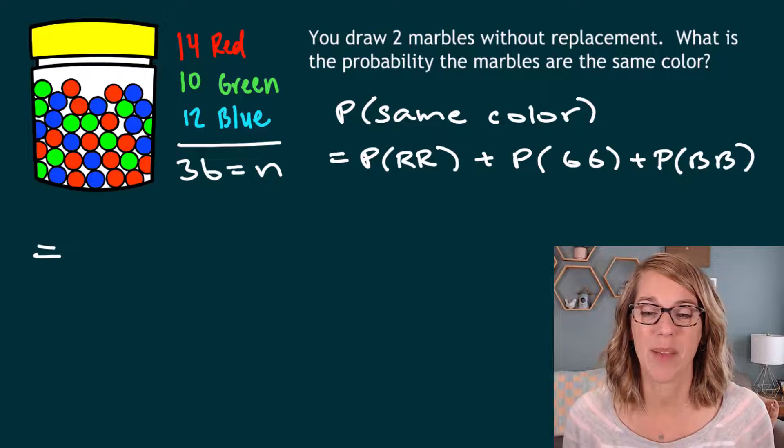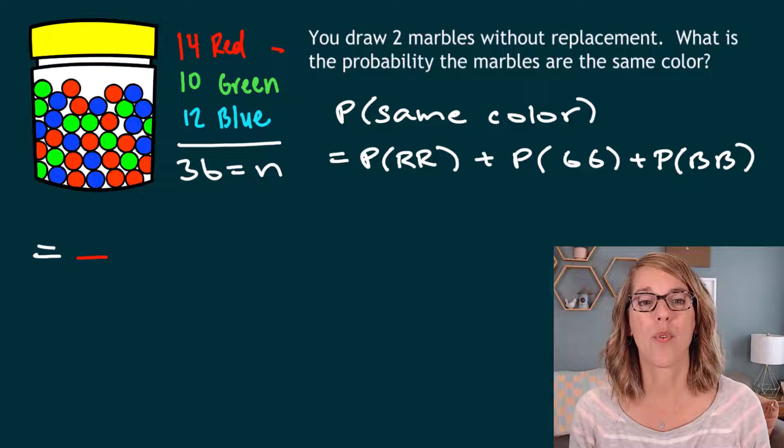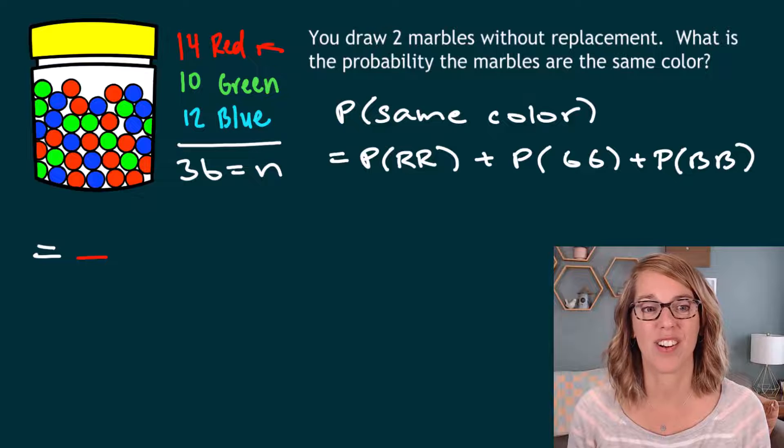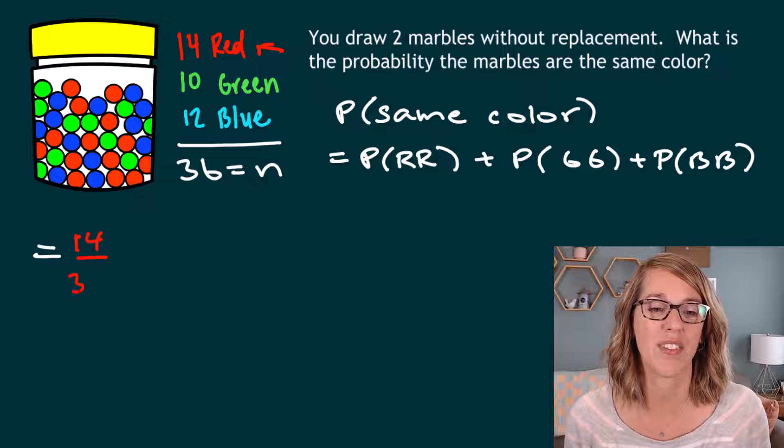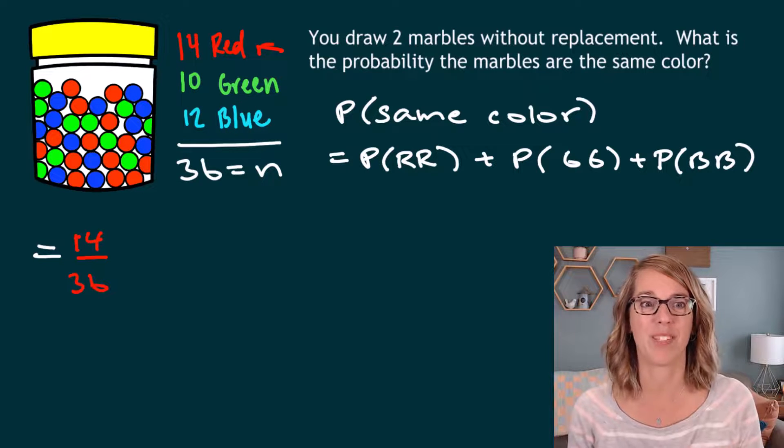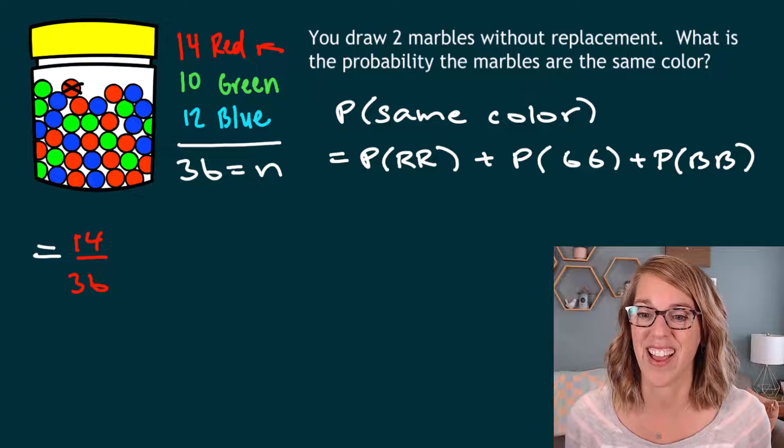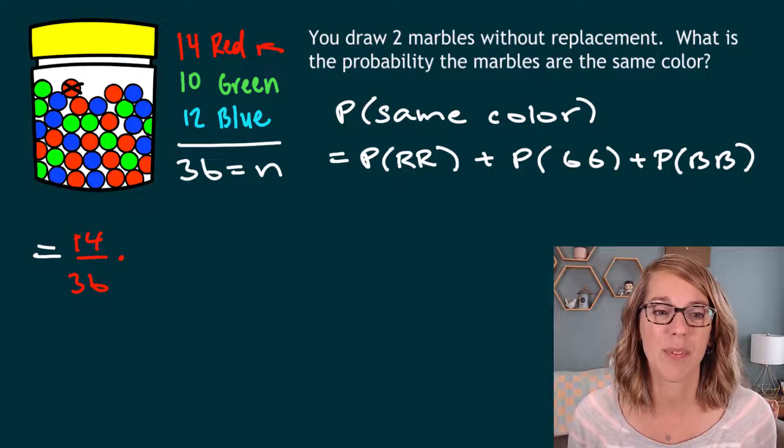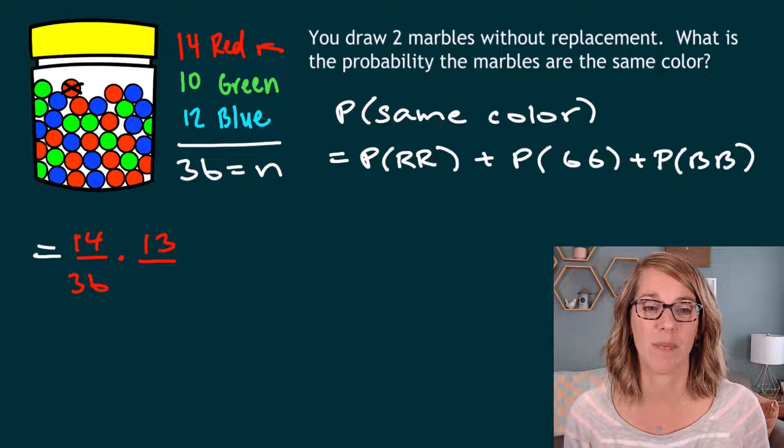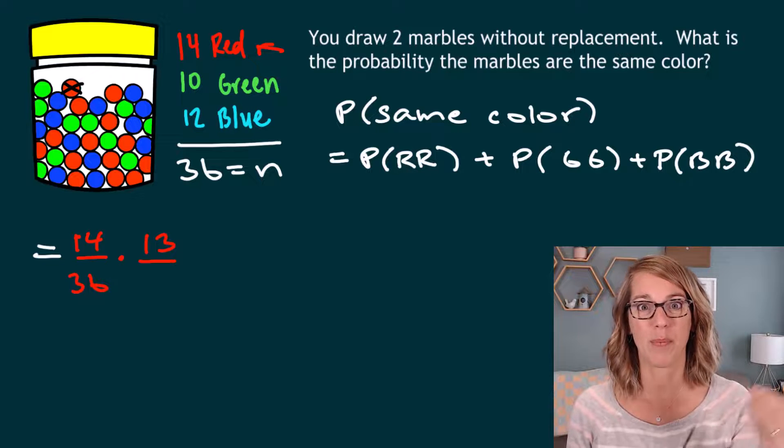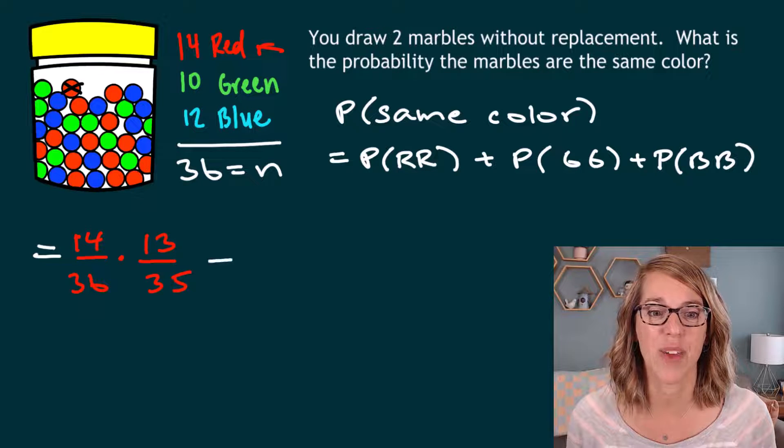Let's start off with the two reds. I'm going to put this together as a fraction favorable out of total. Well, there are 14 red marbles in that jar. So there are 14 ways that I could choose a red marble. So 14 out of the 36 total, but this is without replacement. So I'm going to cross off one of those red marbles. It has gotten set aside. So I want red and red. So I'm going to multiply those together. There are now 13 left in this jar, 13 red marbles. Total marbles, because I took that one out, there are 35. So that's our first case, red and red.